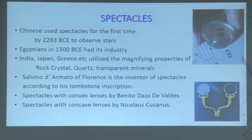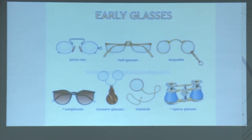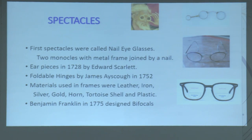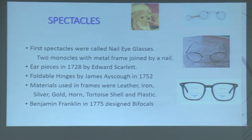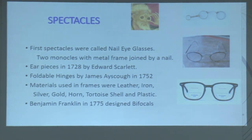Spectacles: the Chinese used spectacles for the first time around 2283 BC to observe stars. Egyptians in 1500 BC had a lens industry. India, Japan, Greece and others utilized the magnifying properties of raw crystal quartz and transparent minerals. Salvino d'Armato of Florence is credited as the inventor of spectacles, according to his tombstone inscription. Spectacles with convex lenses were made by Benito Daza de Valdés, and with concave lenses by Nicolas Cusanus. The first spectacles were called nail eyeglasses — two monocles with metal frames joined by a nail. Earpieces were discovered in 1728 by Edward Scarlett. Foldable hinges by James Ayscough in 1752. Materials used in frames included leather, iron, silver, gold, horn, tortoise shell, and plastic. Benjamin Franklin in 1775 designed bifocals.